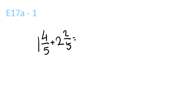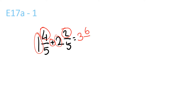Question 1. The first step you want to do for this is get the 1 and plus 2. 1 plus 2 is 3. Get the 4 plus 2, which is 6, over 5, because the bottom one stays the same.